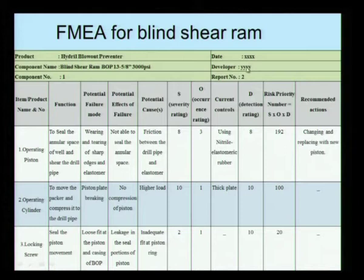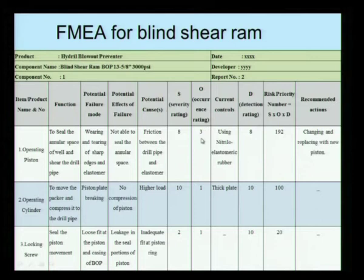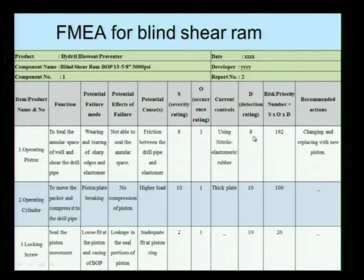The date and developer's name are entered here. The essential function of an operating piston is to seal the annular space of the well and shear the drill pipe. The potential failure mode is wearing and tearing of the sharp edges of the elastomer. The effects of the failure will be inability to seal the annular space. The causes could be friction developing between the drill pipe and the elastomer. The severity rating of this component is 8 on a 10-point scale. The occurrence is 3 — a low occurrence phenomenon because the operating piston does not fail frequently. You can use nitrile elastomeric rubber to reduce the occurrence rate further. If it does fail, you will be able to visibly notice the failure, so the detection rating is very high, and I get the product of SOD as the risk priority number.